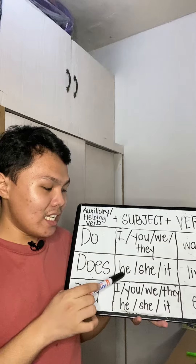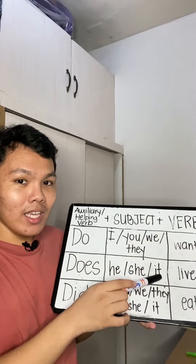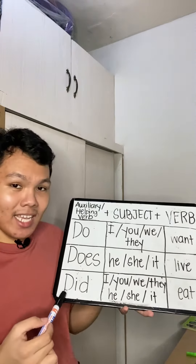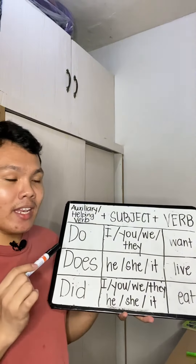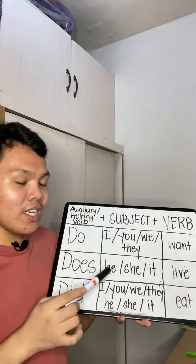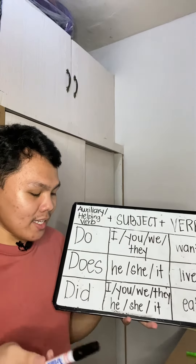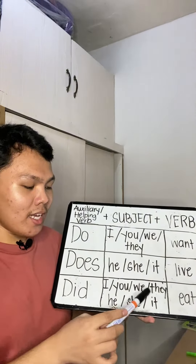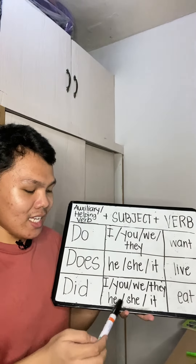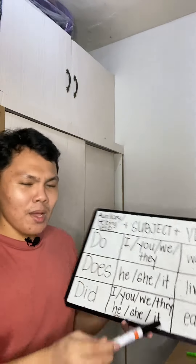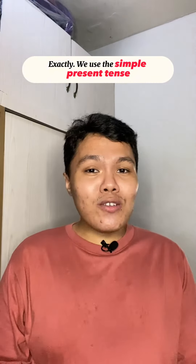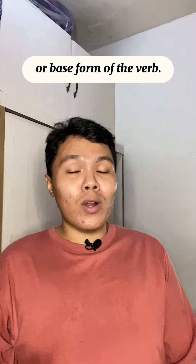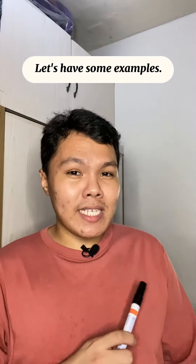If you use did, it should be followed by both plural and singular subjects like I, you, we, they, he, she, or it. But the question is, what tense of the verb should we use? We use the simple present tense or base form of the verb. Let's have some examples.